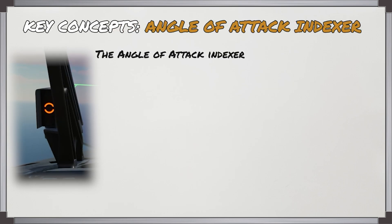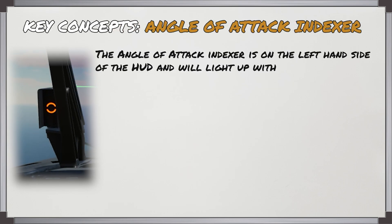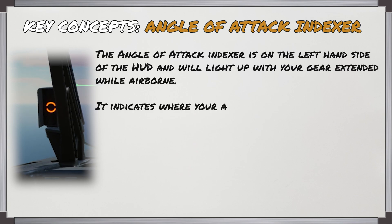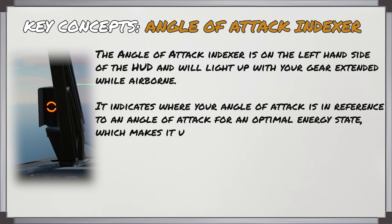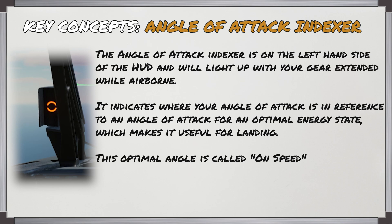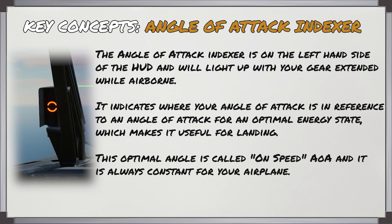The angle of attack indexer in the F-18 is on the left-hand side of the HUD and it will light up with the gear extended while you're airborne. It indicates where your angle of attack is in reference to an angle of attack for an optimal energy state, and this makes it useful when you're coming in to land. This optimal angle is called on-speed angle of attack and it's always constant for your airplane regardless of the conditions.